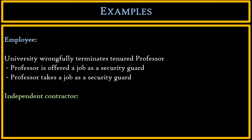There is one important proviso: the money she makes as a security guard will only go to mitigate her damages if she could not perform both jobs at the same time. If the security guard job is part-time and she could have done it simultaneously with her professor job, then it will not go to mitigate the damages the university has to pay her.